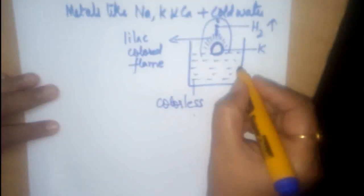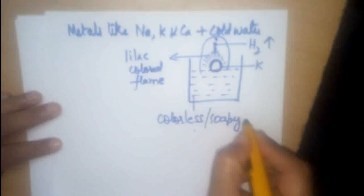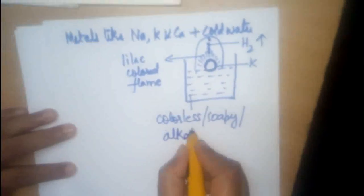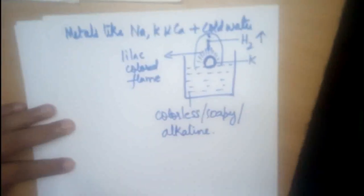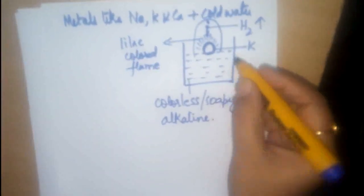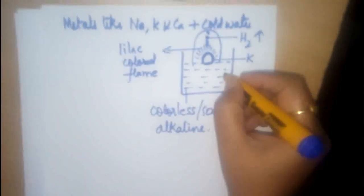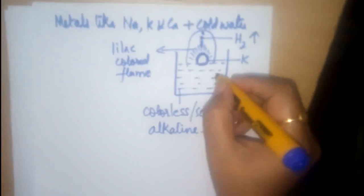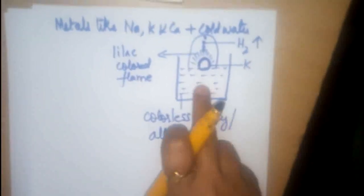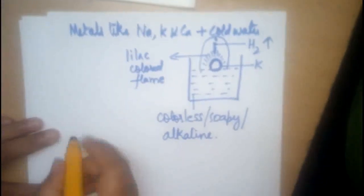And the solution is colourless. The solution in the beaker is, it is colourless. Soapy to touch and at the same time, it is alkaline by nature. That is, if I touch or if I dip it with a red litmus paper, it turns to blue, showing the solution is alkaline.